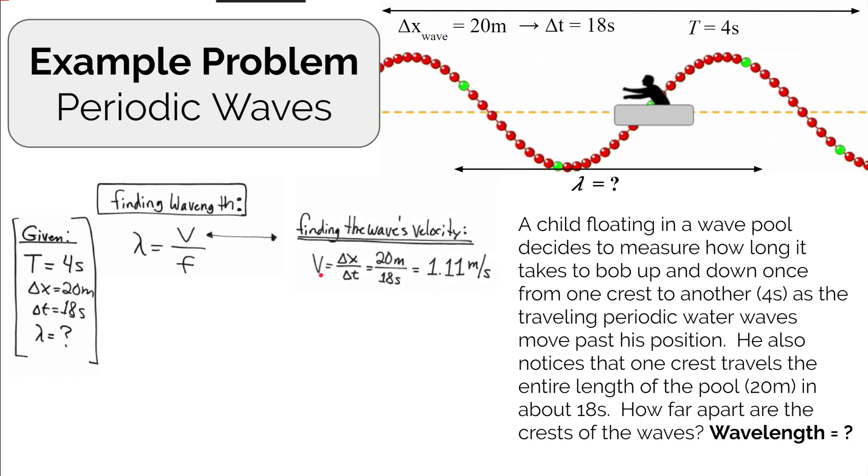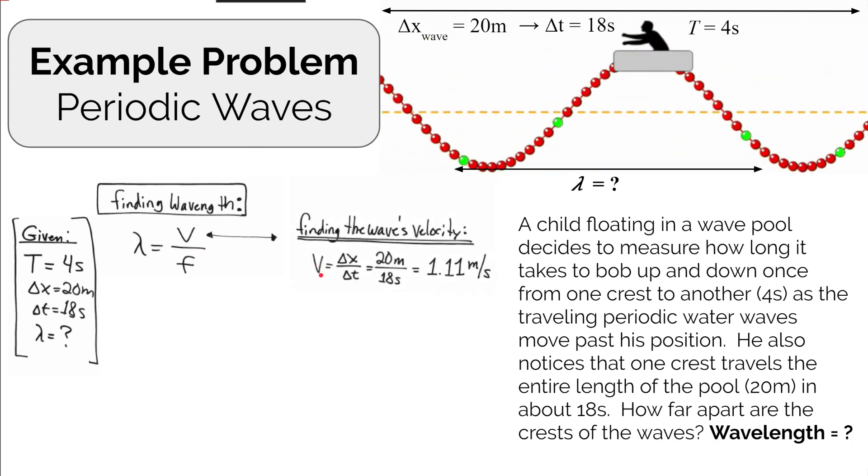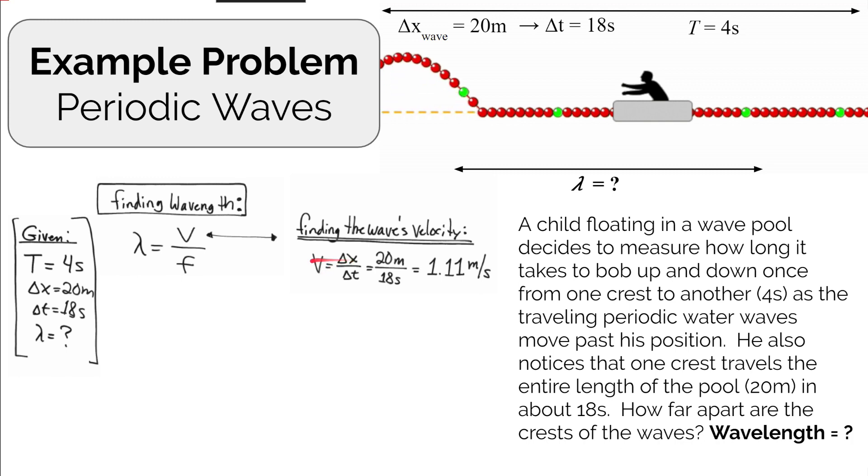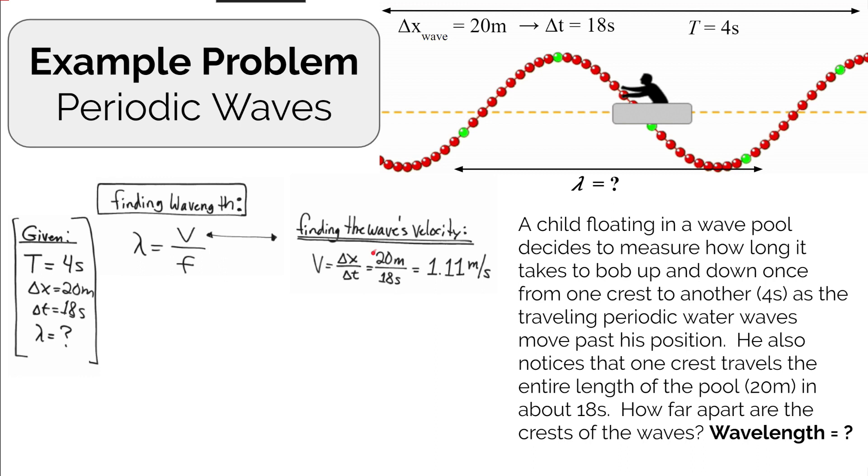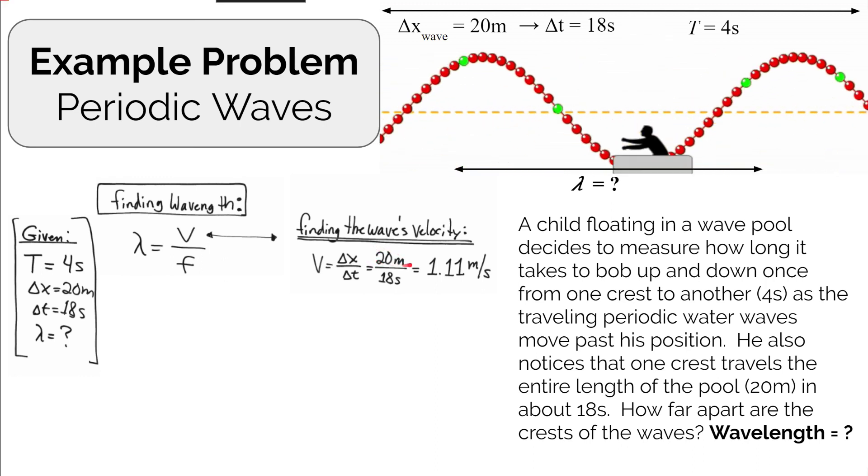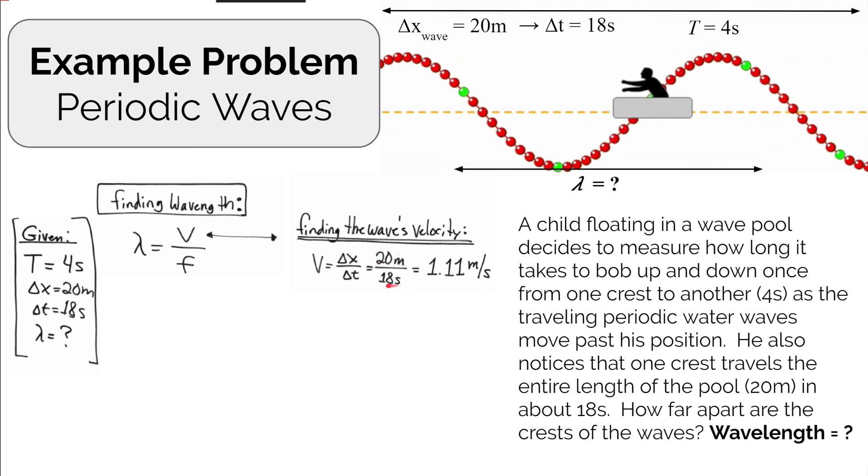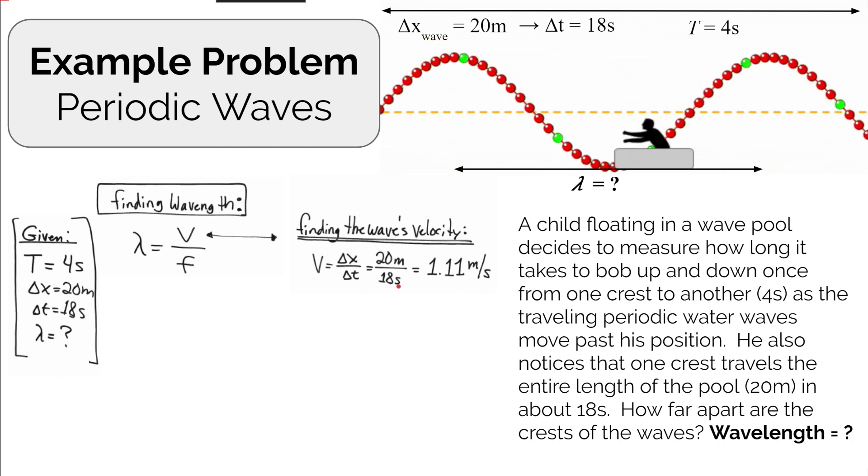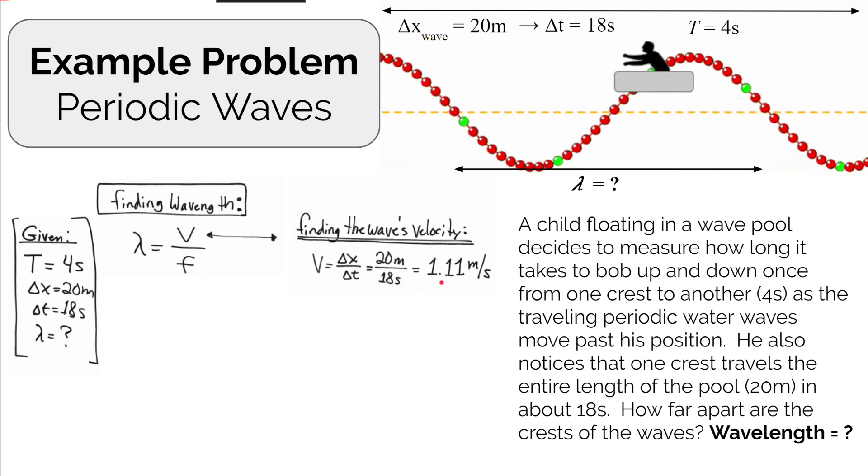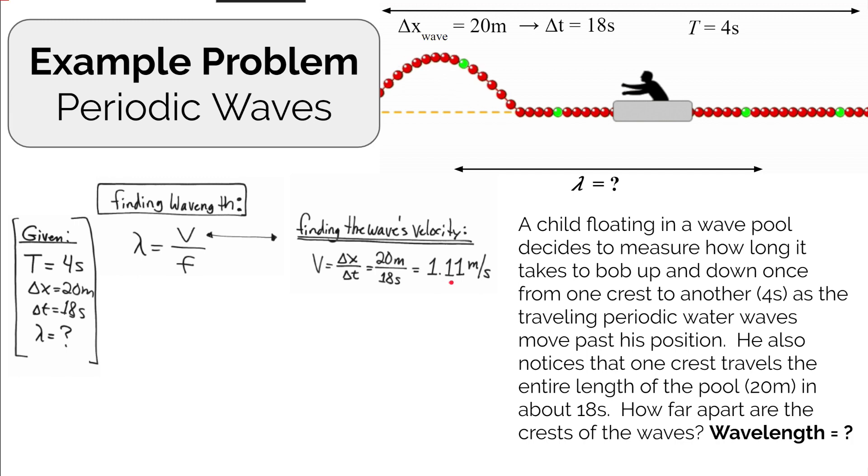Waves move at a constant speed through a material, so velocity is just displacement divided by time. The waves are displaced 20 meters in 18 seconds. So they're moving at about 1.11 meters per second. That's the wave speed.